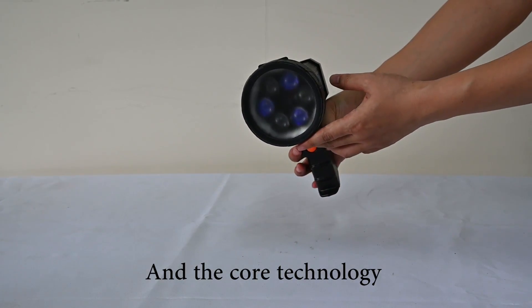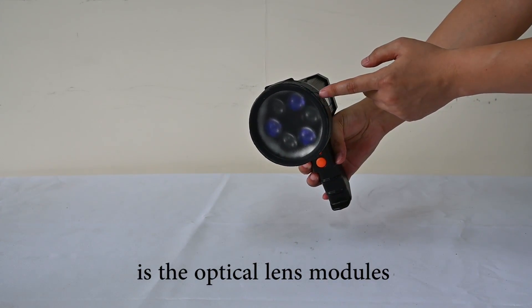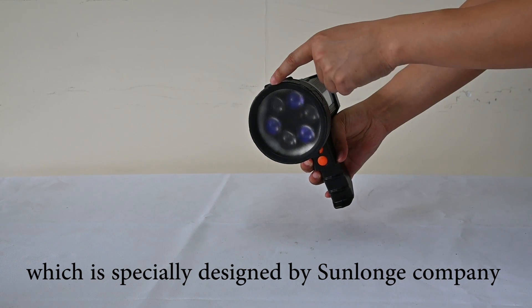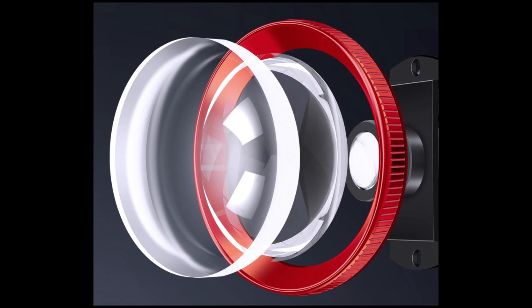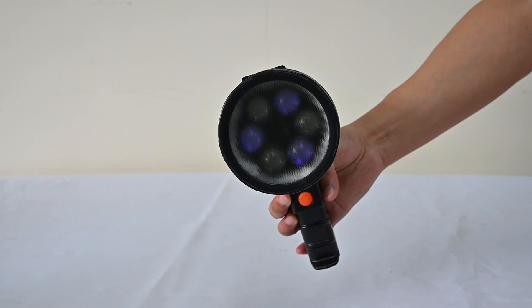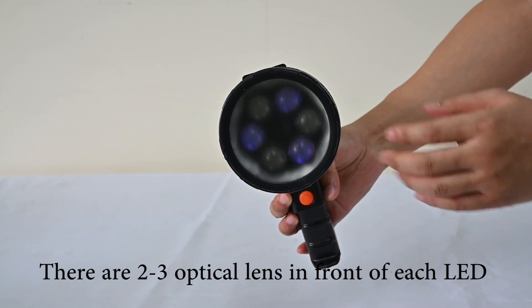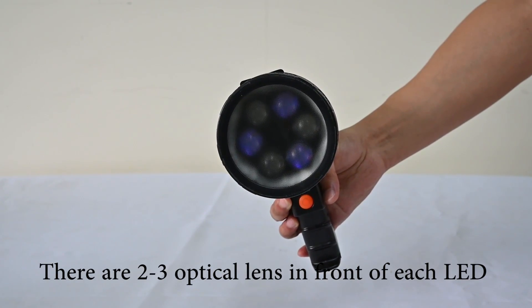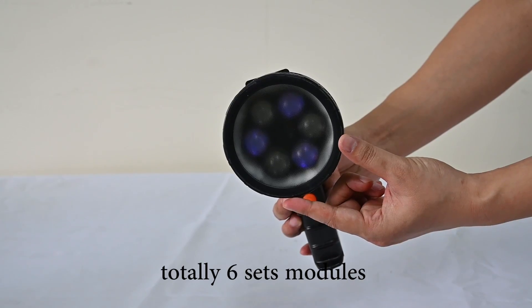And the core technology is the optical lens module, which is specially designed by Salom company. There are 2-2-3 optical lenses in front of each LED. Totally, 6 size modules.